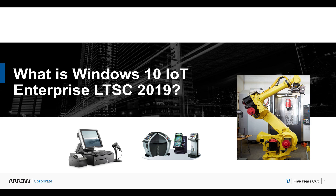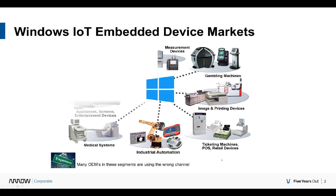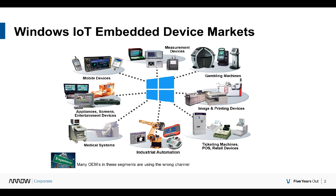The IoT channel is a specific channel of Windows products — not just Windows 10 but some other Windows products as well — that are used specifically for appliances. As you can see in this photo, that ranges from a robot arm to a gaming casino, ATM machines, cash registers, digital signage, and medical equipment, from many many different industries.